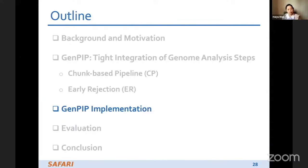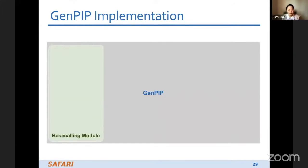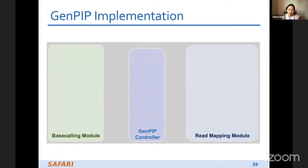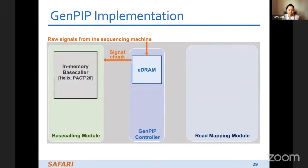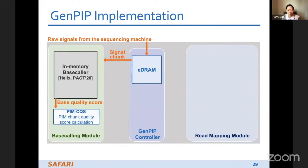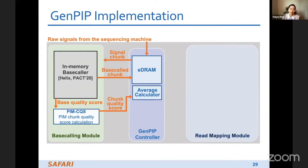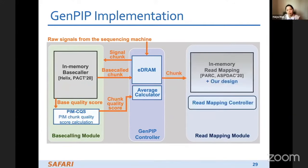GenePIP has three modules: a base calling module, a read mapping module, and the GenePIP controller. Raw signals from the sequencing machine are stored in eDRAM, then forwarded as signal trunks to the in-memory base caller. After base calling, trunk quality scores are calculated using the PIM-based trunk quality score calculation, and both the base-called trunks and trunk quality scores are forwarded to the GenePIP controller, which then routes trunks to the read mapping module.